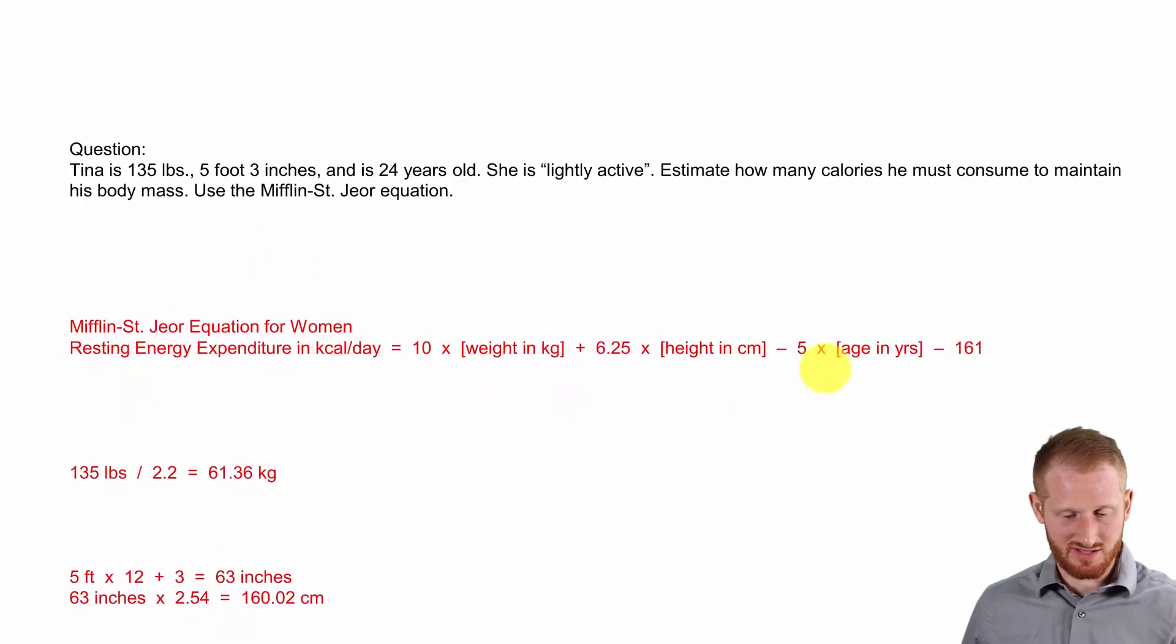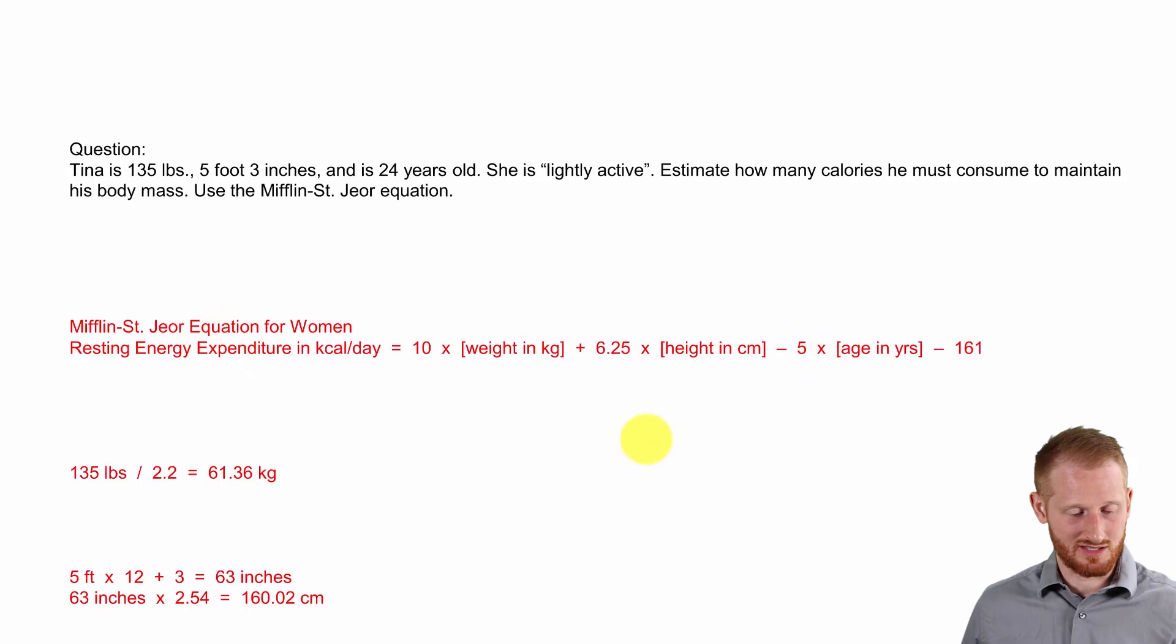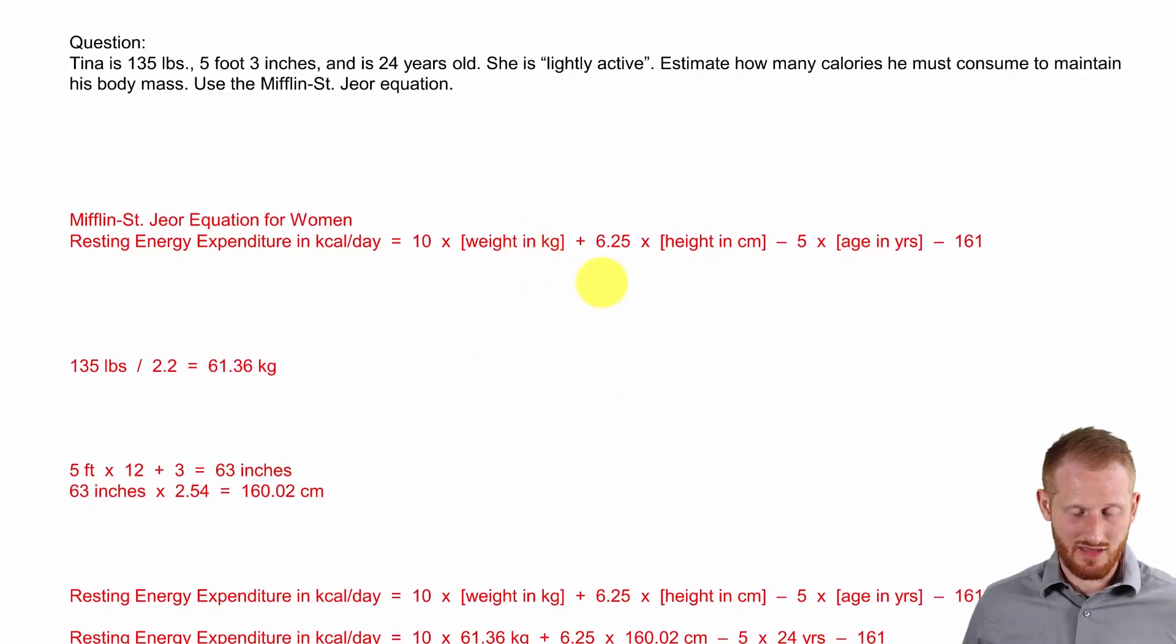Alright, so here's that Mifflin-St. Jory equation for women. Just copy and pasted from the table over there. We need to get everything into the metric system for the weight and the height. So again, she was 135 pounds. Divide that by 2.2 to get 61.36 kilograms of body mass.